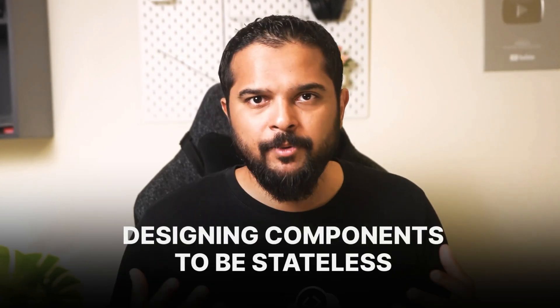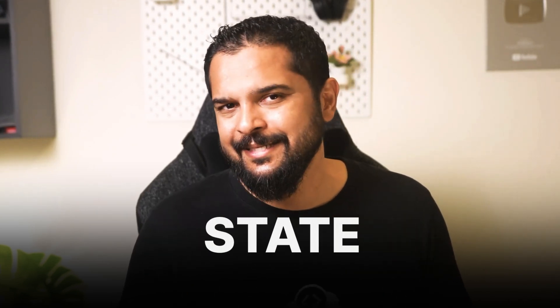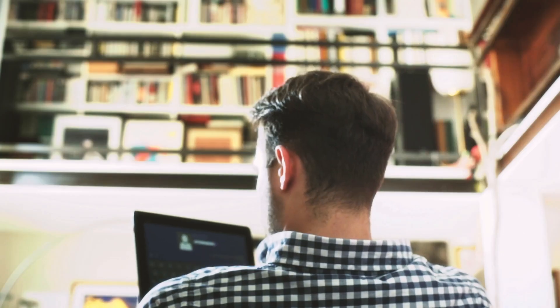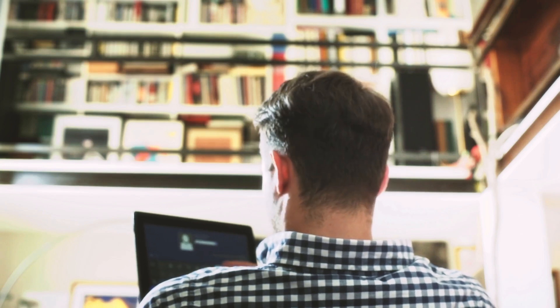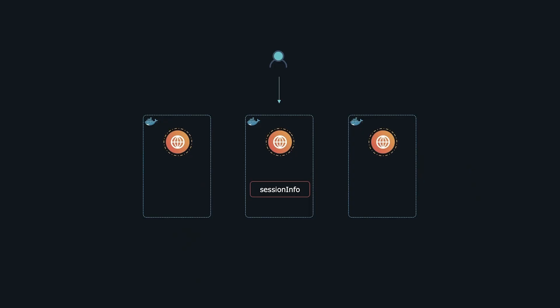With the rise of cloud native architecture, we've shifted away from traditional monolithic applications towards a more modular approach — microservices. One of the key principles is designing components to be stateless. So what does it mean to be stateless? State is how an application defines the condition of a user — for example, whether the user is logged in, or what items are in the user's cart. If that state information is stored in memory or on local disk on the same instance and that instance crashes, the user's state is lost and all their work is gone.